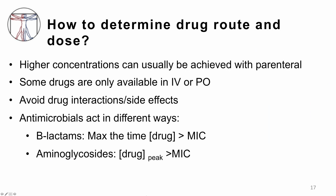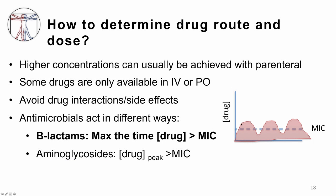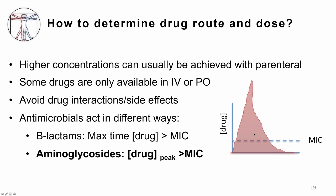For beta-lactam antibiotics, you don't care how high the peak is, but you want the most amount of time that the drug levels are above the minimum inhibitory concentration. Ideally, dosing would be almost a continuous infusion just above the MIC the whole time. This is in contrast to aminoglycosides, where it's really important to get very high levels — that is the goal. If you just had lower levels above the MIC, you would not be as effective and would actually run into more toxicity issues with that antibiotic class.